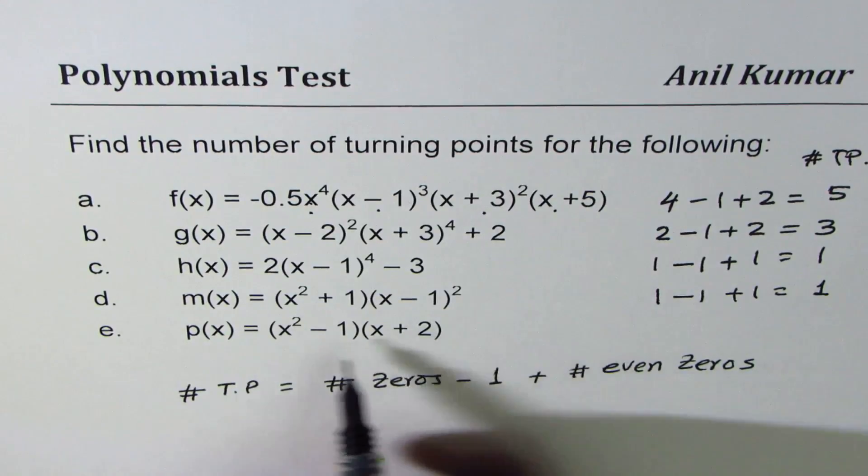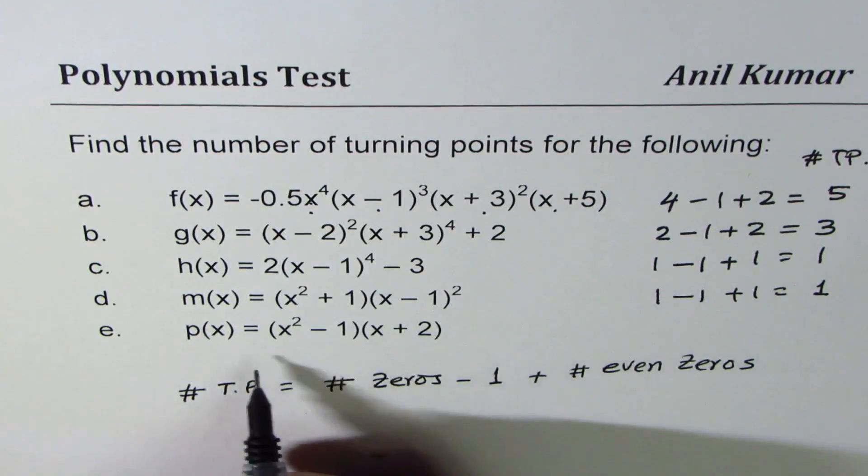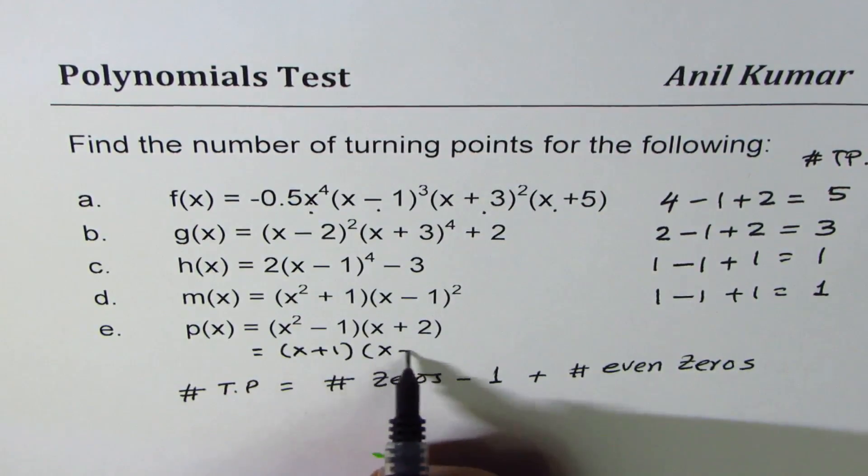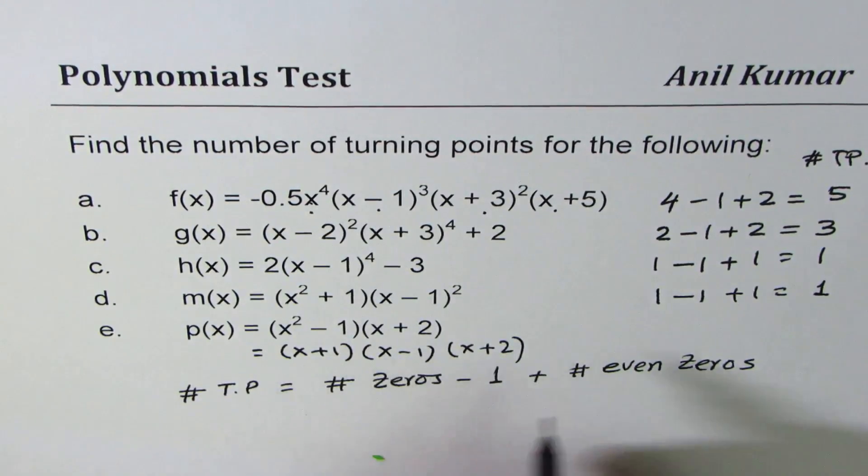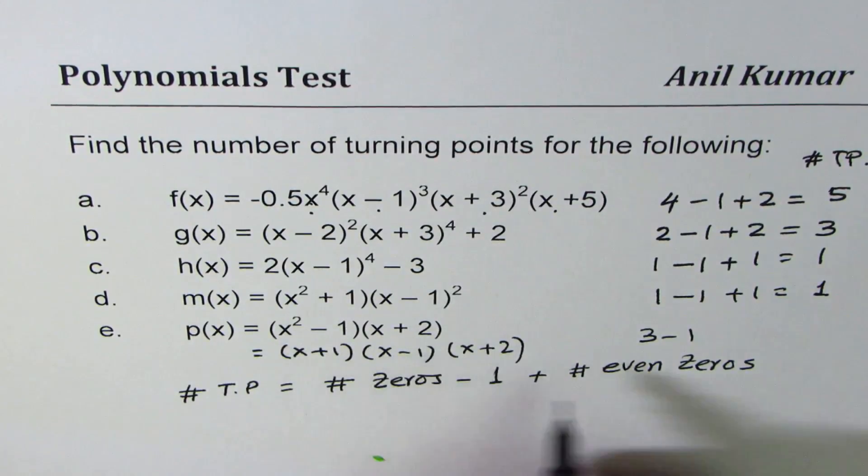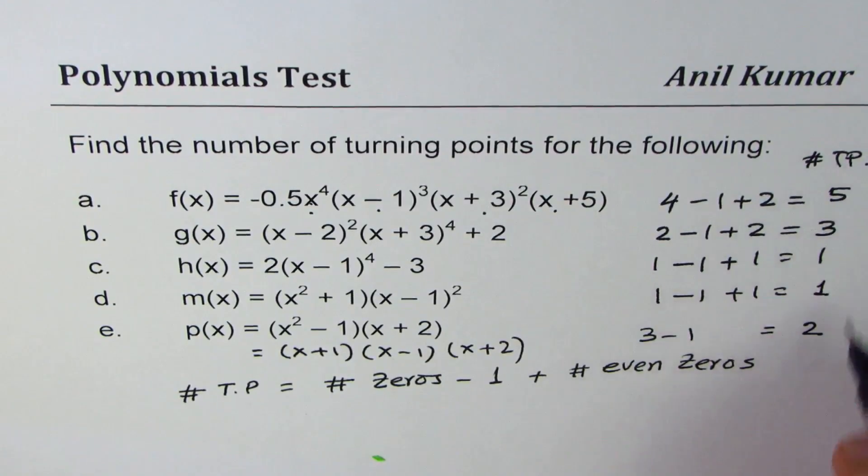The next one here is x² - 1 times (x + 2). You can always write this as (x + 1)(x - 1)(x + 2), so we have 3 zeros minus 1. All are linear, so none of them is even. So 3 minus 1 is 2, so that is how, using the formula, we can get the number of turning points.